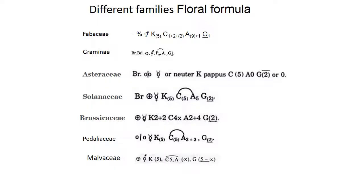The different floral formulas of different families are given here. I have not covered Solanaceae and Pedaliaceae in the previous slide. Solanaceae has five calyx, five corolla, five androecium, and superior two-carpel gynoecium.